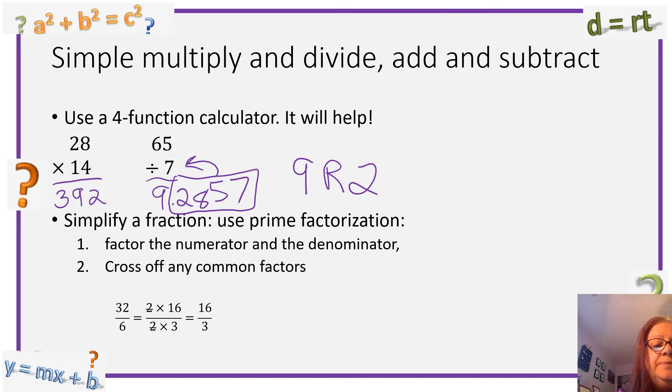Simplify a fraction. Use prime factorization. Factor the numerator and the denominator. Cross off any common factors. You can see we've crossed off the 2's right here. And we're left with 16 over 3. That is the simplified fraction.